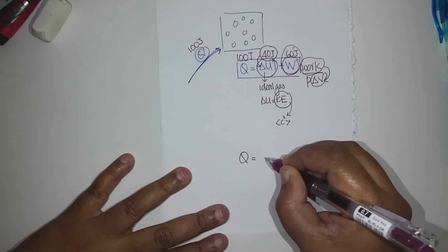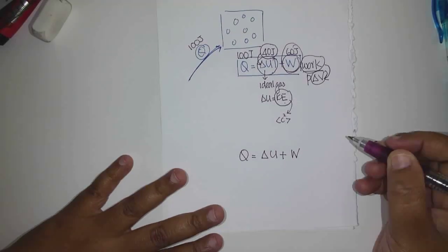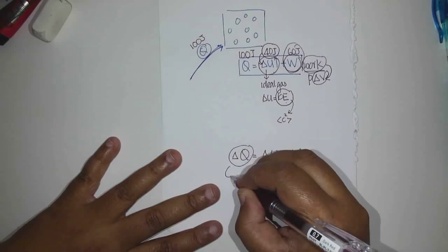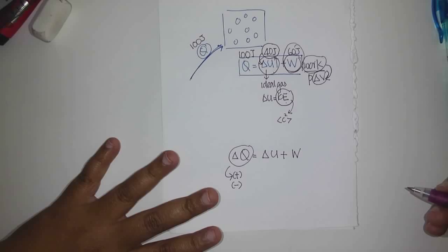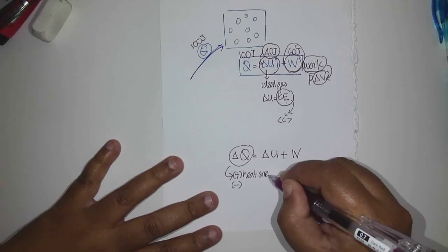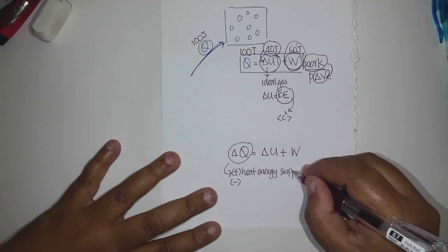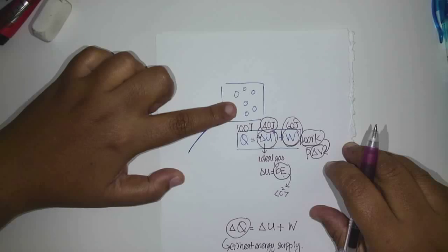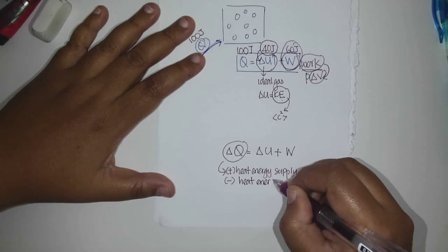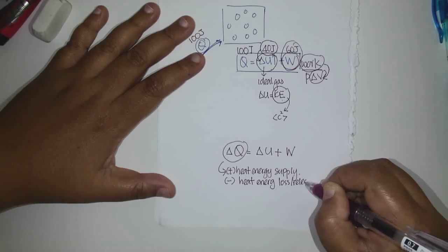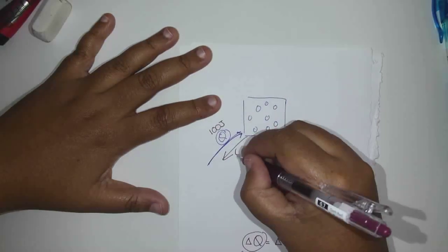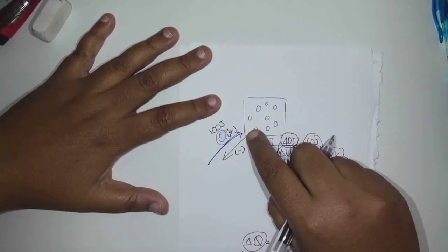To explain the formula Q equals delta U plus W more carefully, we have to look at the signs. Delta Q has two signs: positive and negative. If it's positive, that means heat energy is supplied — heat energy is given to the gas. If it's negative, that means heat energy is lost or released by the gas. So Q positive means heat supplied; negative means heat released.